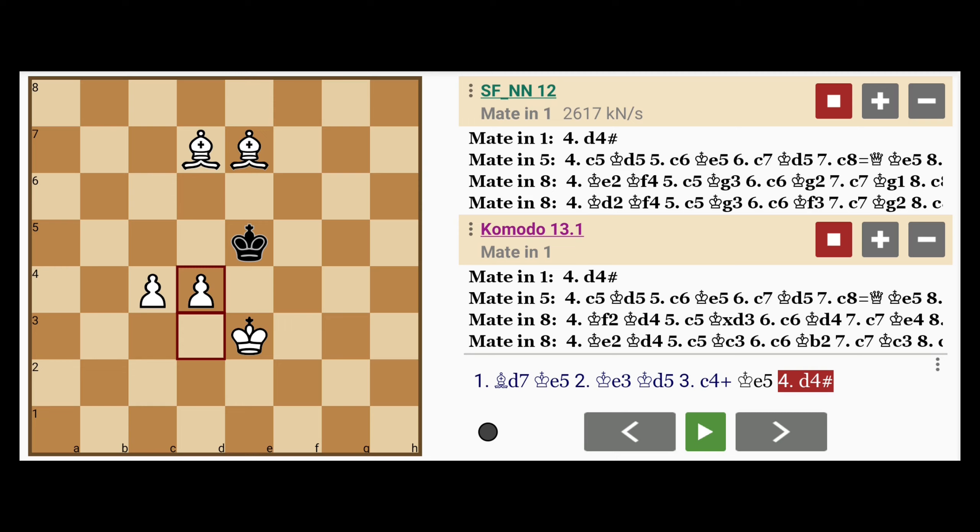the two bishops guard the four squares c6, d6, e6, and f6, in the same way that the two pawns guard b5, c5, d5, and e5, with the king on e3 providing that last bit of support on f4.